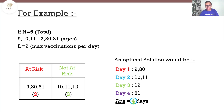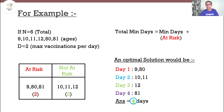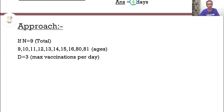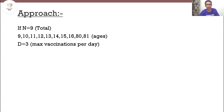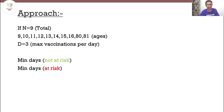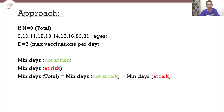The total minimum days to vaccinate all people equals the minimum days to vaccinate the at-risk category plus the minimum days to vaccinate the not-at-risk category. Our approach is simple: find the minimum days for the not-at-risk group, find the minimum days for the at-risk group, then add them together.